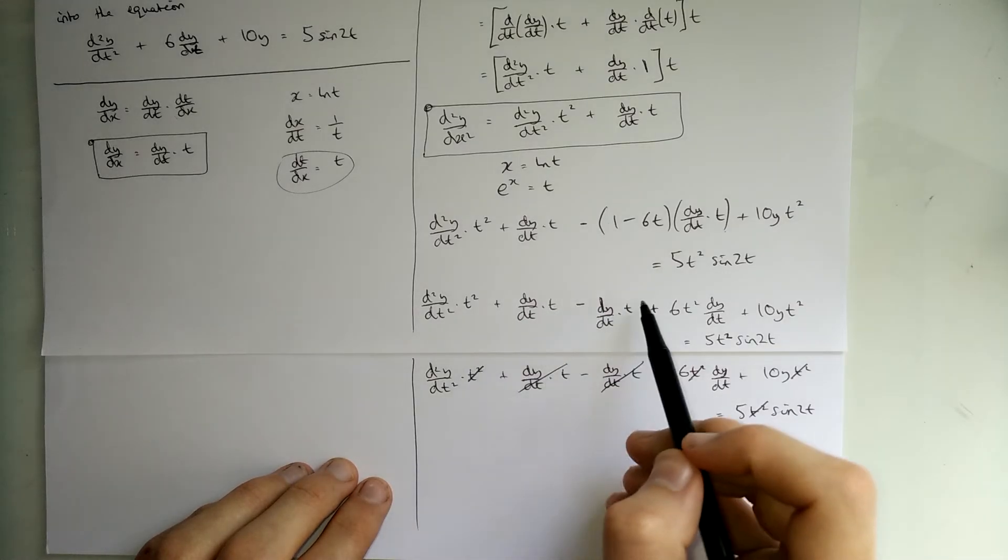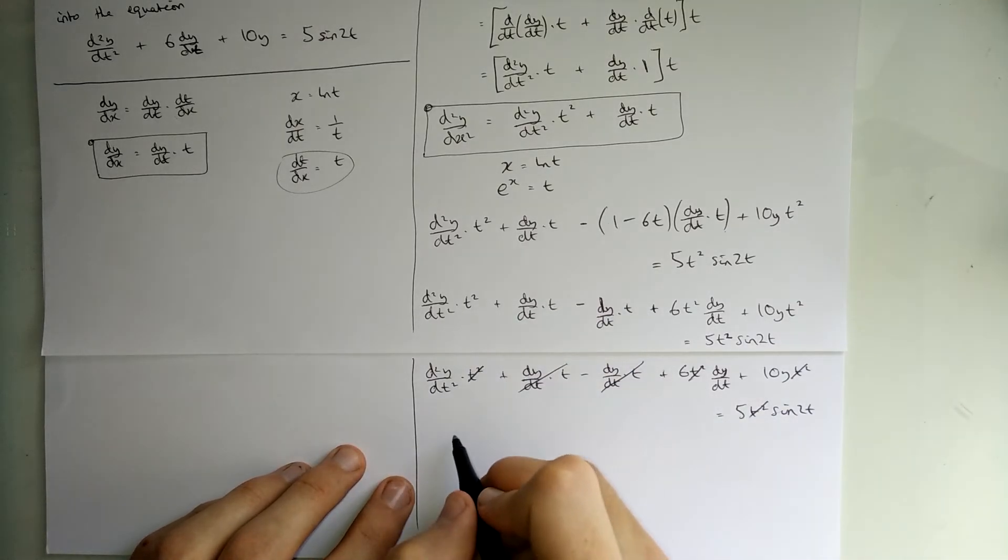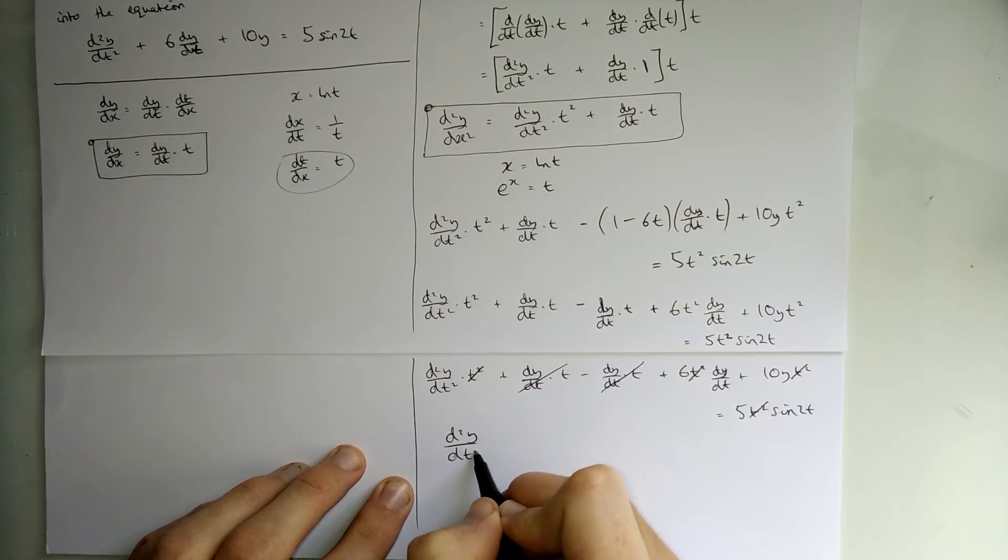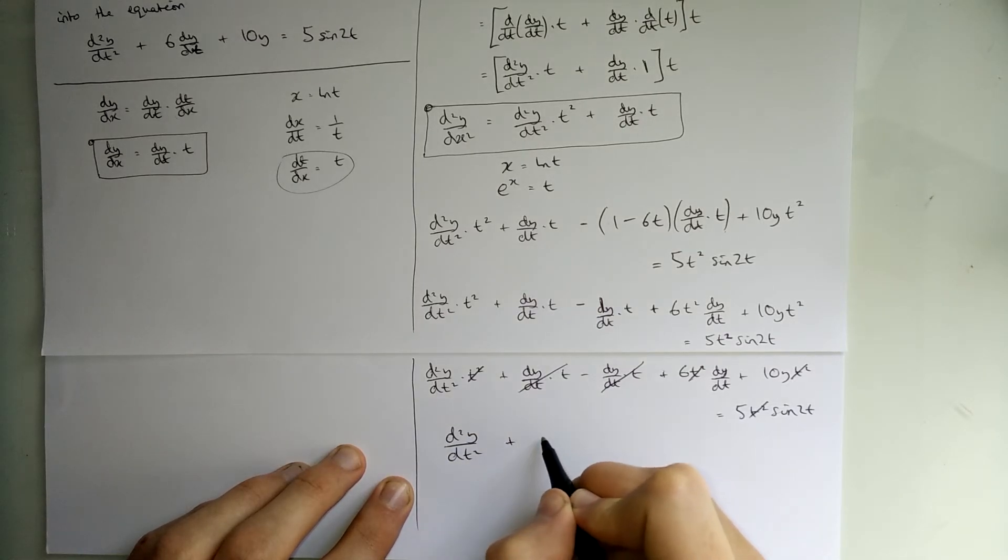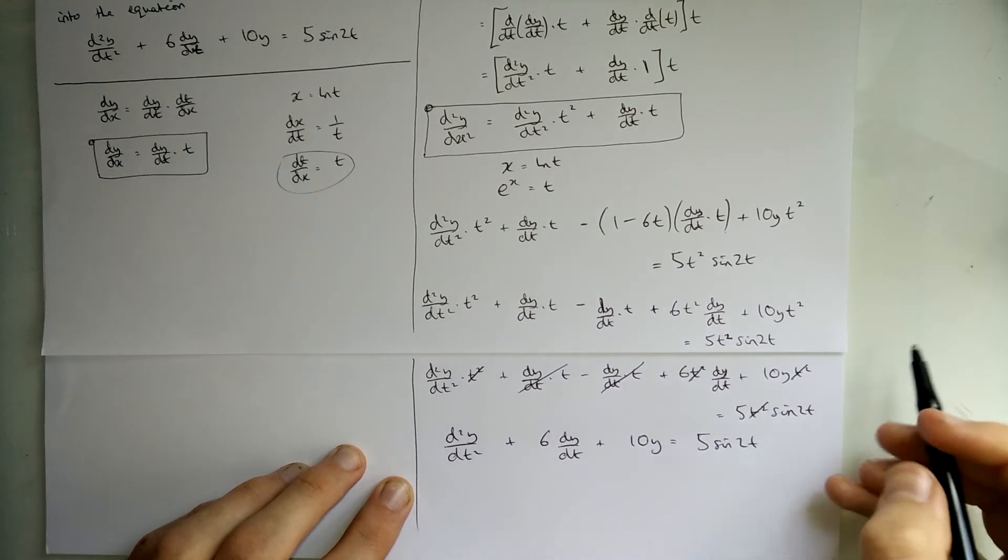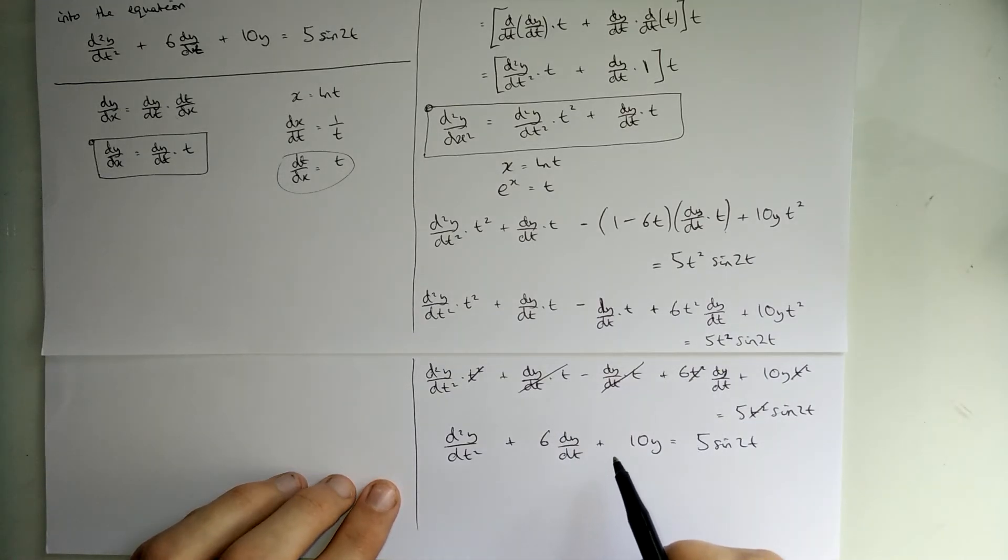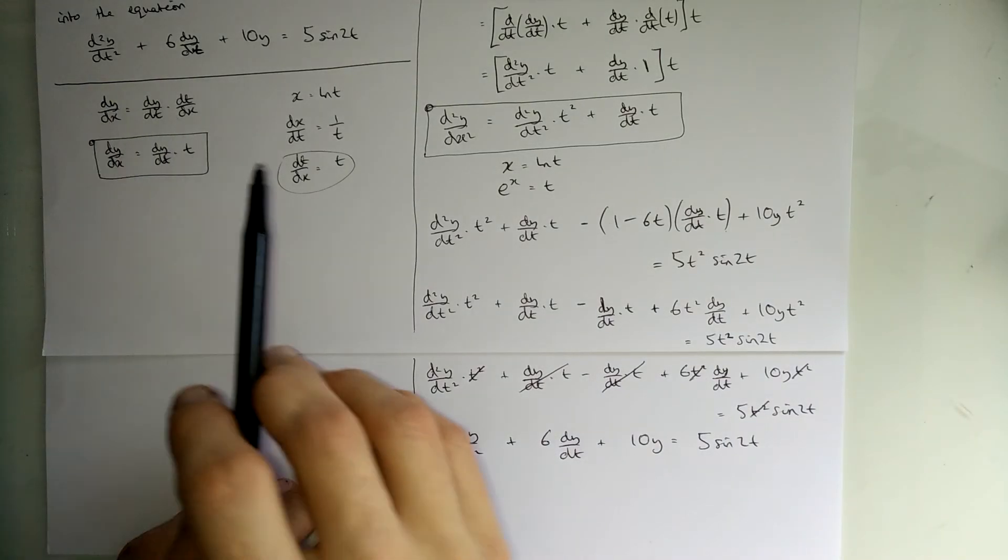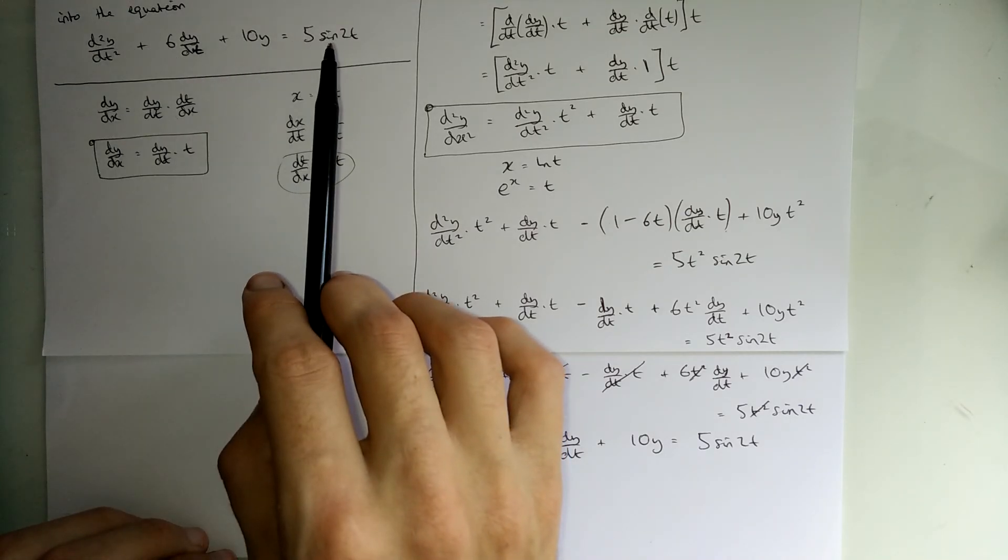In practice, I'll probably start just crossing things out here, right? That gives me leftover: d²y/dt² plus 6 dy/dt plus 10y is equal to 5 sine 2t. If I just ignore things that are crossed out. And that is what we originally wanted. You can still see it just written just there, yeah?